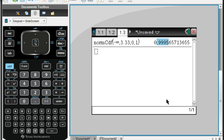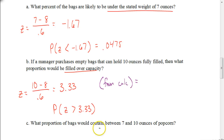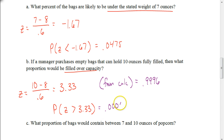The probability that z is going to be greater than 3.33 — remember, 0.9996 is where it's less than 3.33 — so if I subtract that from 1, I get 0.0004, or about 0.04% of the bags are going to be overfilled. That's a pretty slim chance, so as a business owner, that would be a good decision to increase the size of the bag to 10 ounces.